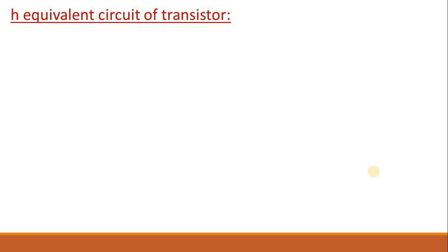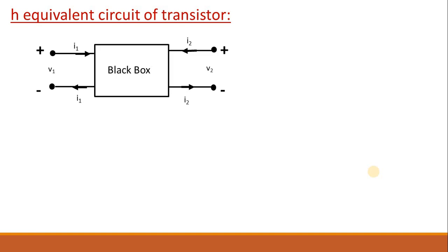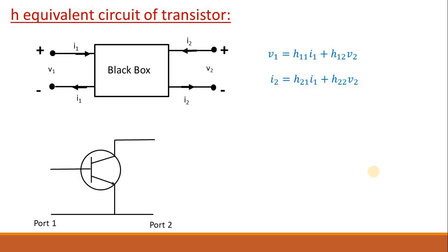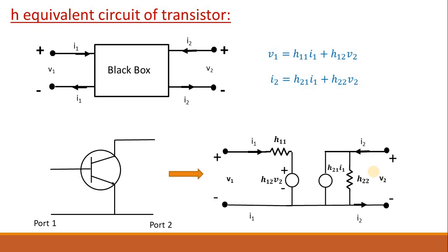Now the question is, how is this black box diagram suitable for our transistor? This is a simple NPN transistor in common emitter configuration. From this picture, it is very clear we will have four terminals — a pair of two terminals, port 1 and port 2. This simple circuit can be represented as a hybrid equivalent circuit.